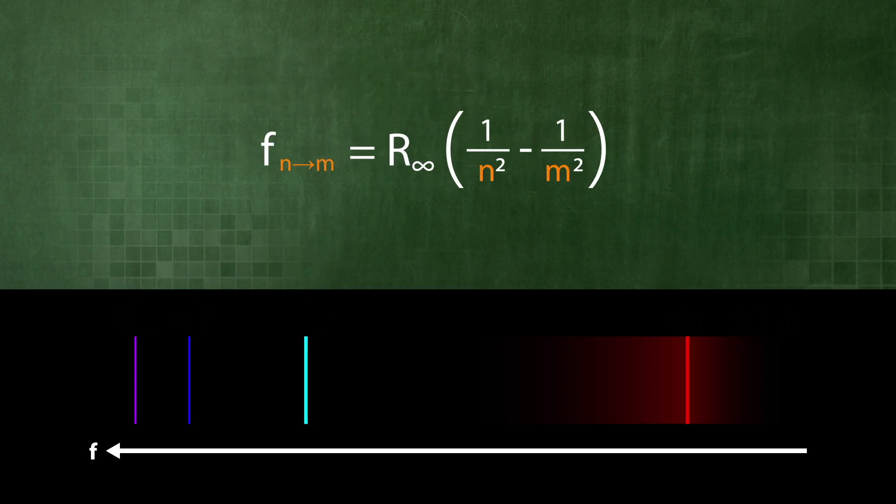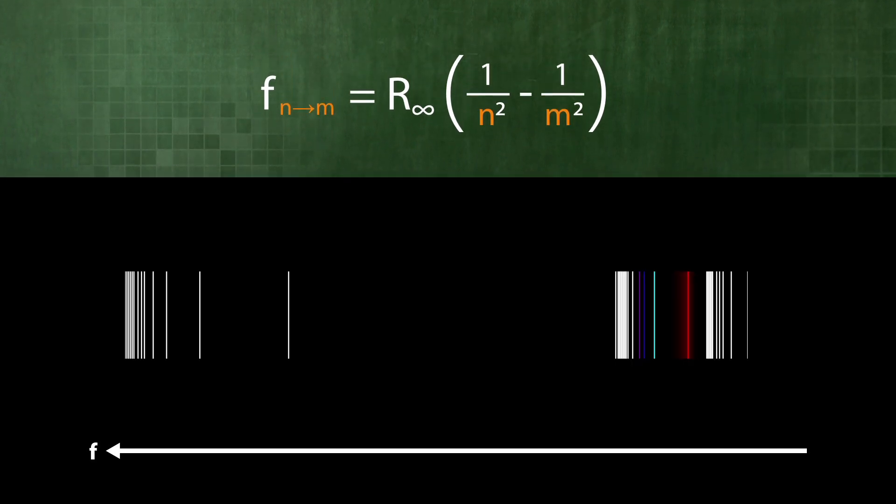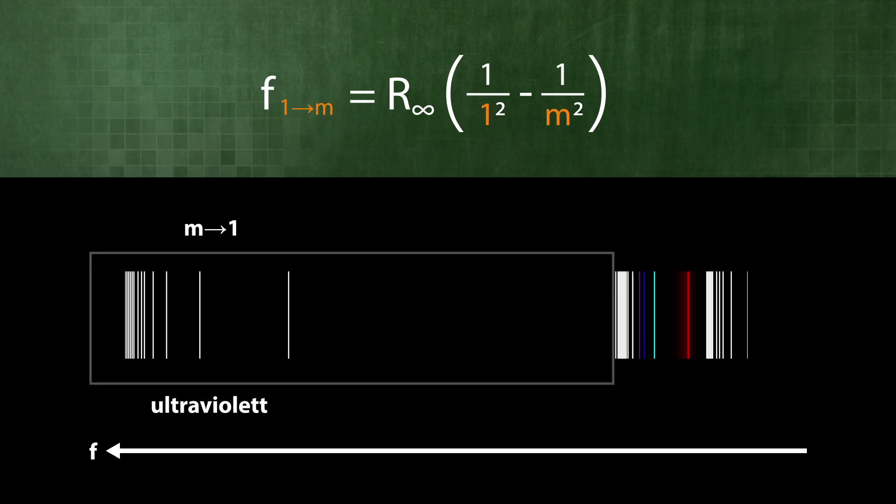Johannes Rydberg extended his formula for use with any m and n. It can thus be used to predict frequencies in the hydrogen emission spectrum that are outside the visible region. With this prediction, he hit the mark.